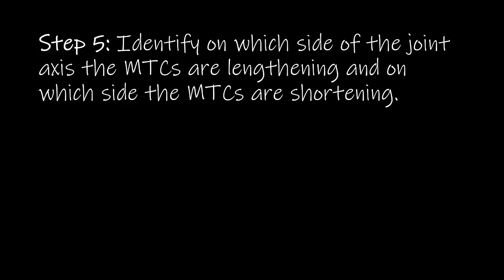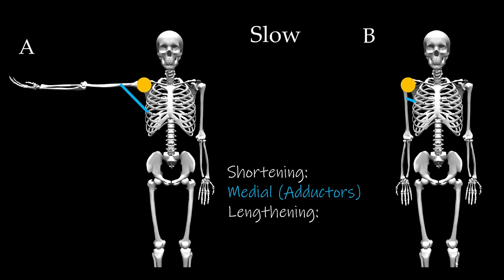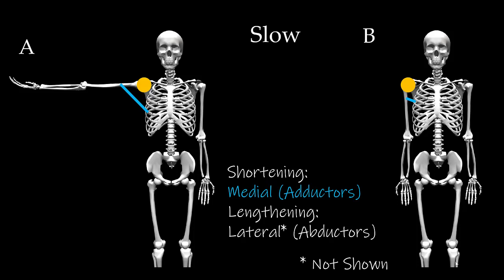Step 5 is to identify on which side of the joint axis the MTCs are lengthening and on which side the MTCs are shortening. As we go from A to B slowly, MTCs on one side are lengthening while MTCs on the other side are shortening. We can see that the MTCs on the medial side — the adductors — are shortening from picture A to picture B. This means the MTCs that are lengthening are on the lateral side, or the abductors.